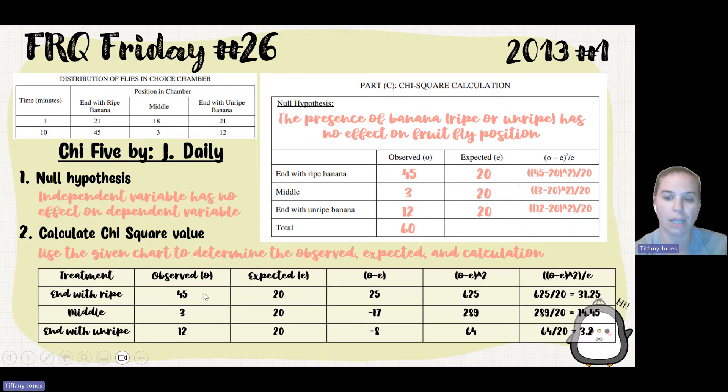And so if I go ahead and use this chart to fill in my calculations, I have my 45, my 3, my 12, my 20, 20, 20. I then have 45 minus 20, which gives me 25. That squared gives me 625 divided by 20, gives me 31.25.